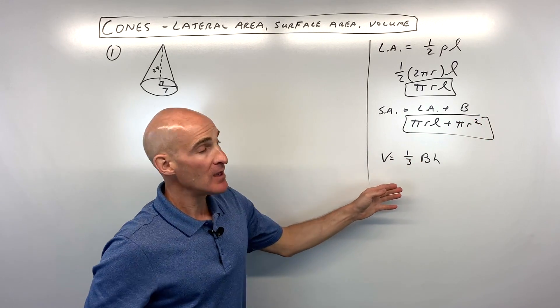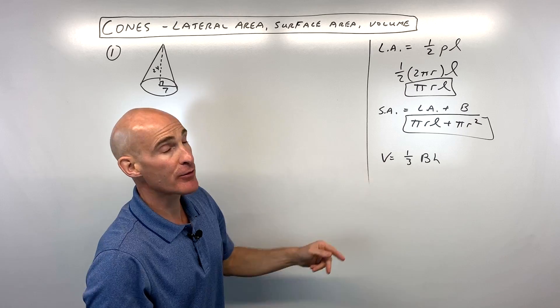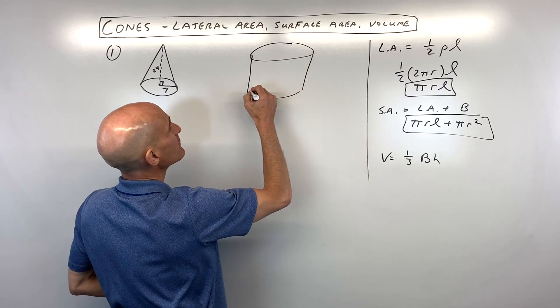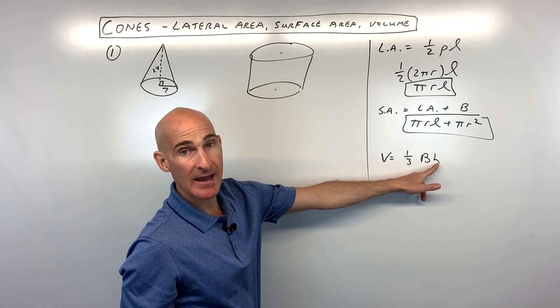And then for volume, you can find the area of the base times the height divided by 3. The way to think about this is, say you had a cylinder. What's the formula for volume of a cylinder? Well, it's the area of the base times the height.